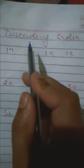In descending order. Now let us arrange these numbers in their descending order. Descending order means the biggest number will come first. Now tell me student which number is the biggest?